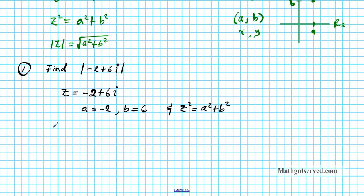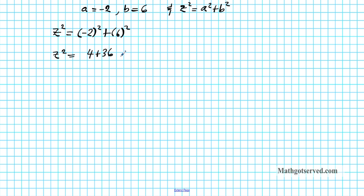Putting it together: z squared equals (negative 2) squared plus (6) squared. When you square negative 2, the negative becomes positive, so we get 4 plus 36, which equals 40. So z squared equals 40.